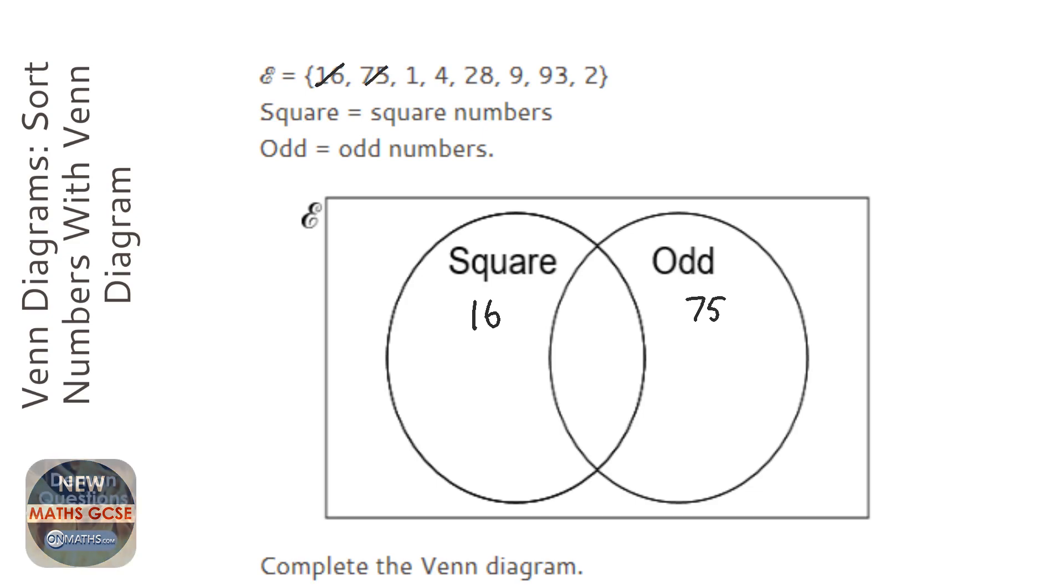Now 1 is a square number and it's odd, so that's going to go in the middle. 4 is a square number, but it's not odd.